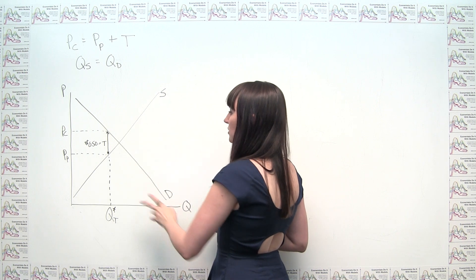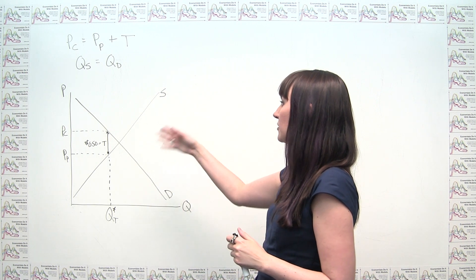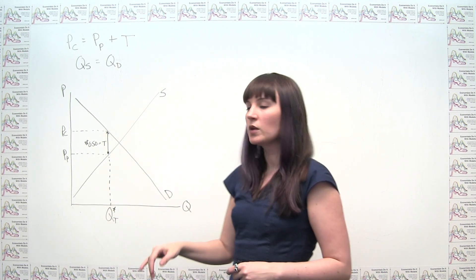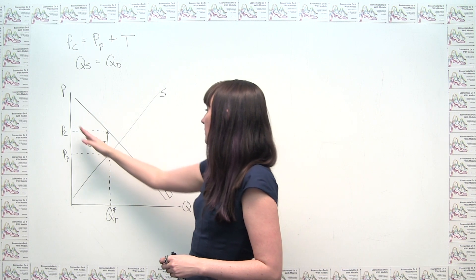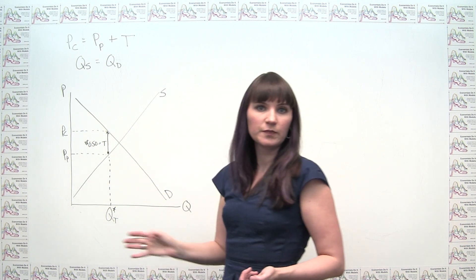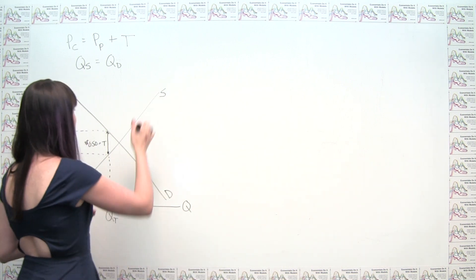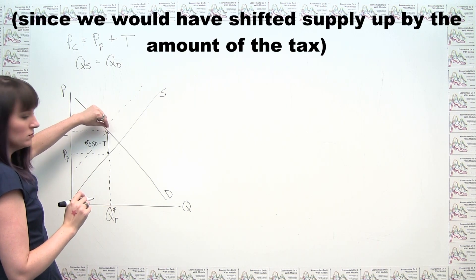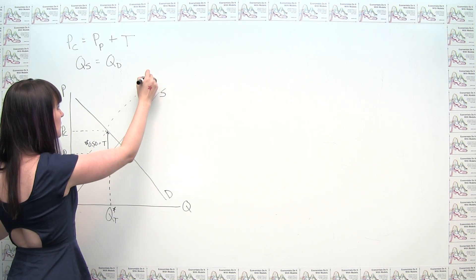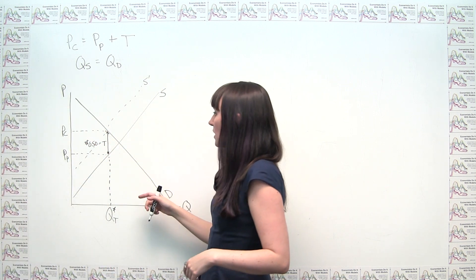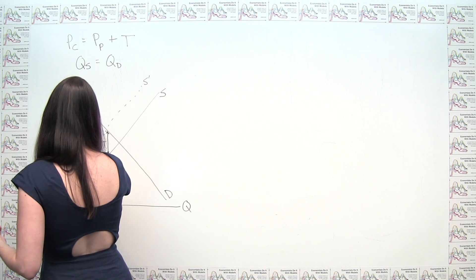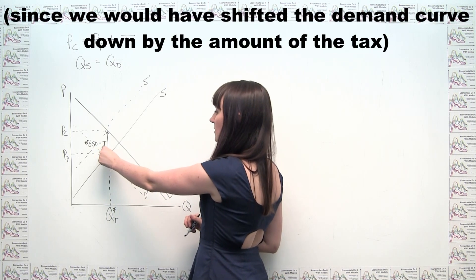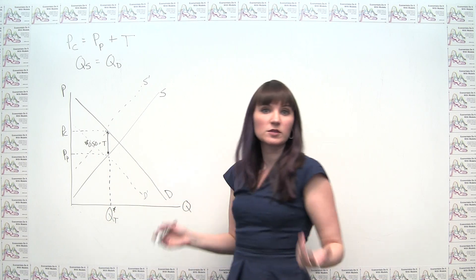If we implemented this by shifting curves: putting the tax on producers shifts the supply curve, and putting the tax on consumers shifts the demand curve. In either case, we would get a market equilibrium at the same Q star sub T — whether we shift the supply curve or shift the demand curve, the resulting equilibrium quantity is the same.